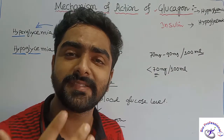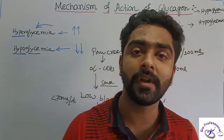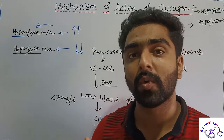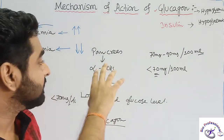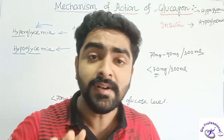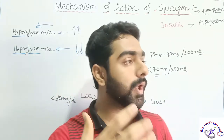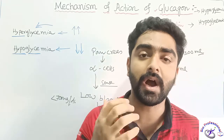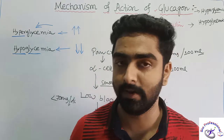Insulin is released by the beta cells of the pancreas when the blood glucose level is high. For now, we know that glucagon comes only when the blood sugar level is less, caused by the alpha cells of the pancreas. We will now see how glucagon takes action and how the blood glucose level will be increased.